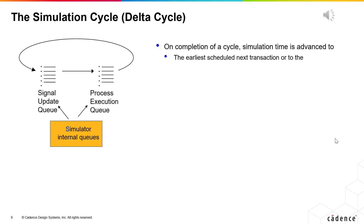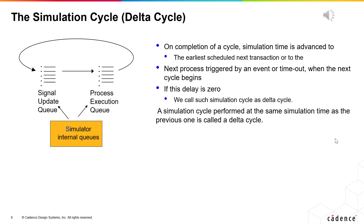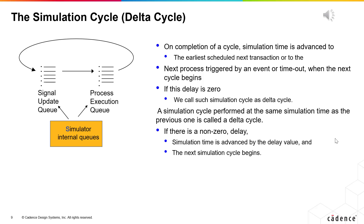Simulation time is advanced to the earliest scheduled next transaction or next process triggered by an event or timeout. If this delay is zero and there is an immediate cycle following the current one at the given simulation time, we call such a simulation cycle a delta cycle. If there is a delay, simulation time is advanced by the delay value and the next simulation cycle begins. Note: a delta cycle consumes simulation cycles but not simulation time.